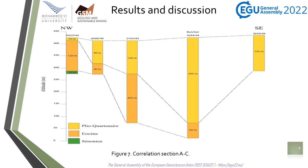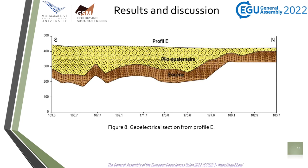The thickness changes are also highlighted by the borehole results. The thickness changes of the Eocene formation show deposits lying either on the Senonian marls or directly on the Paleozoic basement. They particularly show an increase in the thickness of the Eocene formation as we move eastward. These results also describe the synclinal aspect of the Plio-Quaternary deposits, which have a significant thickness in the center of the basin.